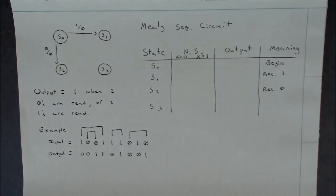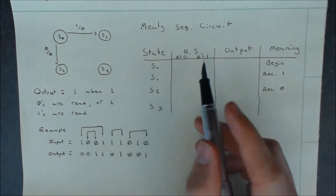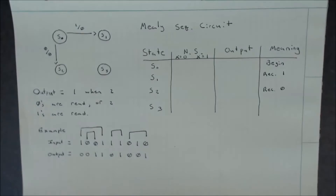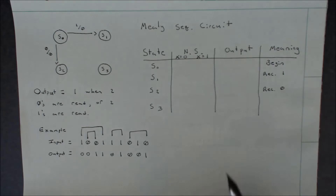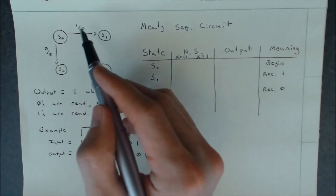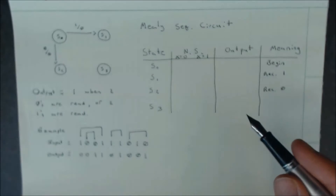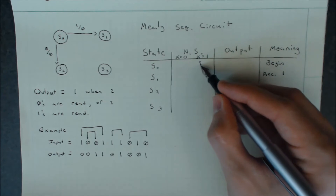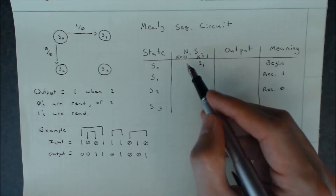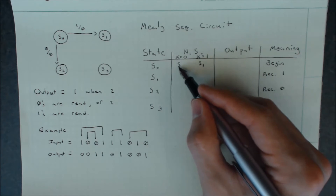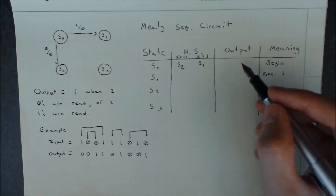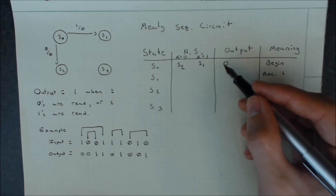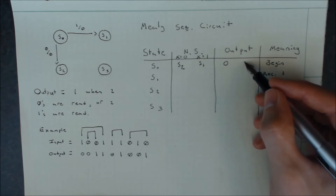We'll wait to define S3 for a little bit. Looking at our column for next states, we're already completely specified for state zero. If we get an input of a one, our output is going to be zero, and our next state when in S0 will be S1. If we get a zero, our next state will be S2. The output going from S0 to S2 is zero, and the output going from S0 to S1 is also zero.